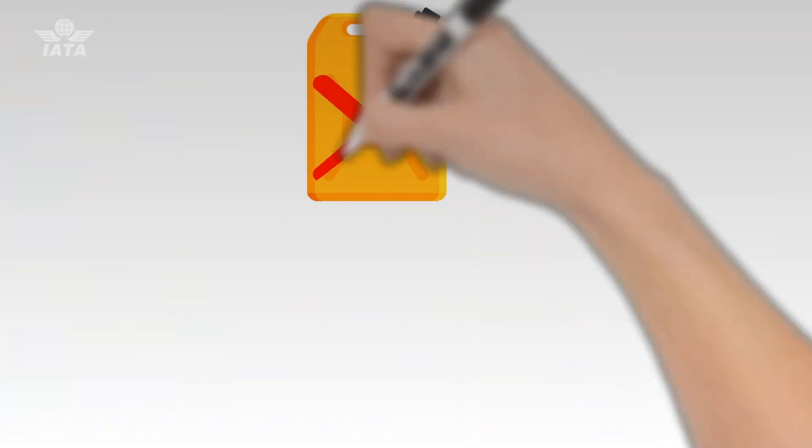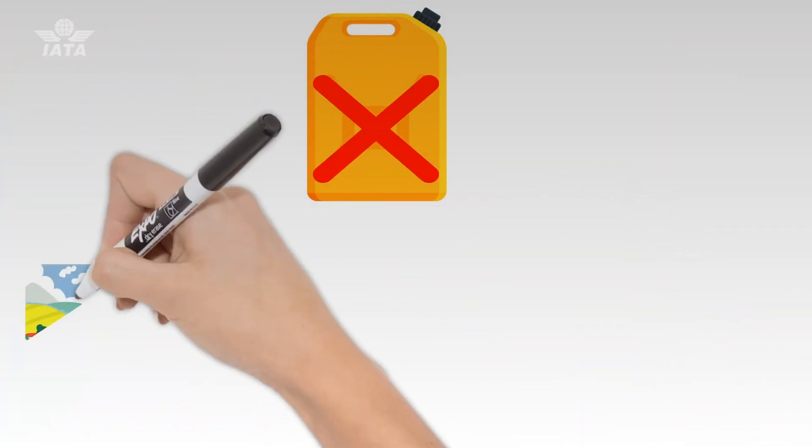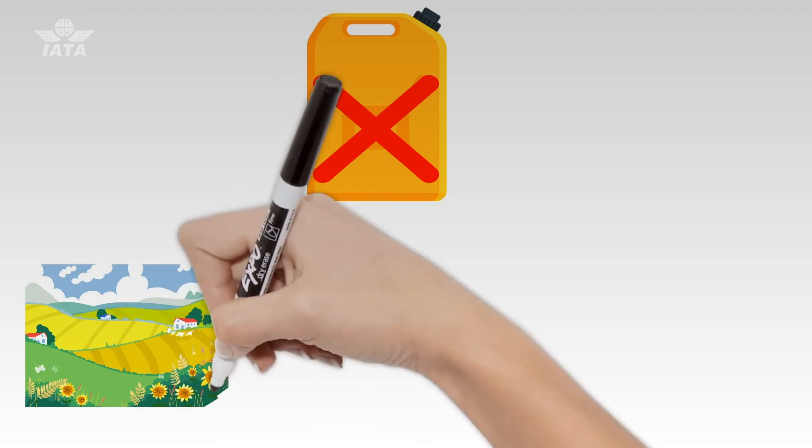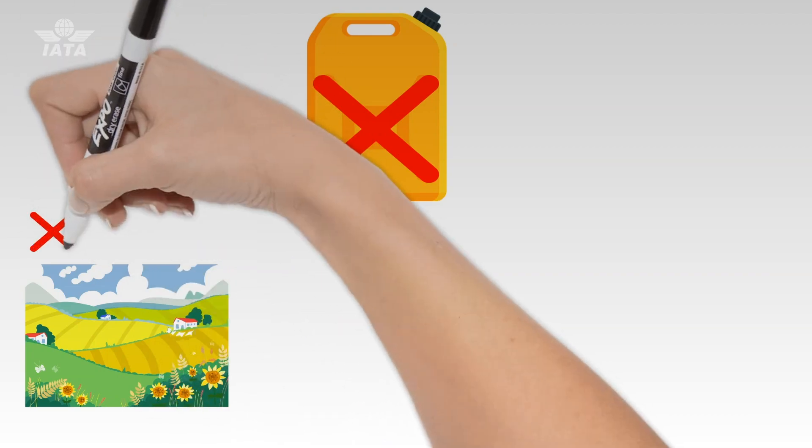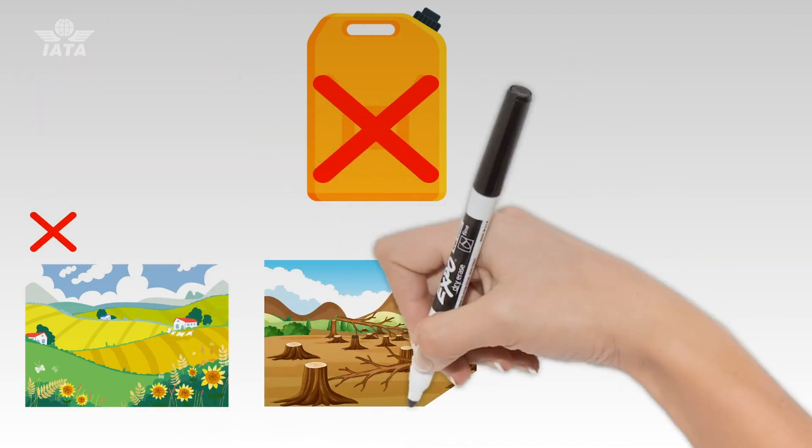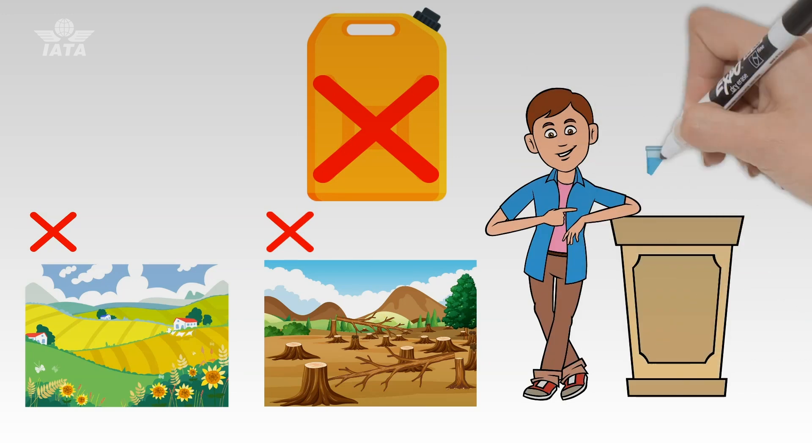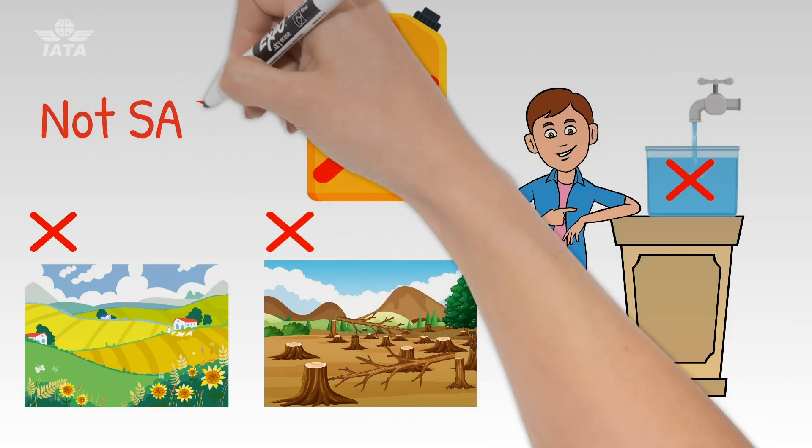But this is what SAF can't be. It can't be made from anything that diverts land use from food crops, or destroys forests, or consumes too much fresh water. Because that's simply not sustainable.